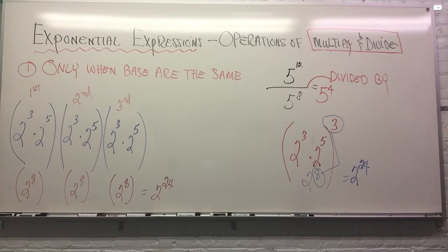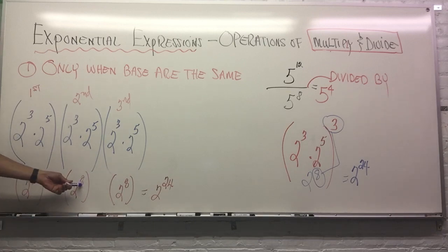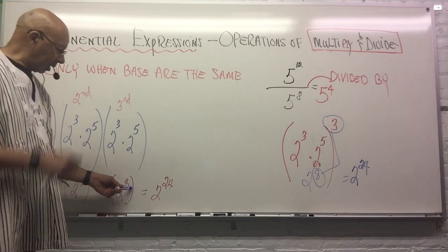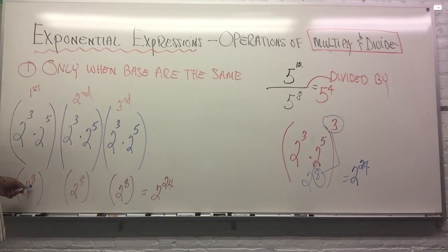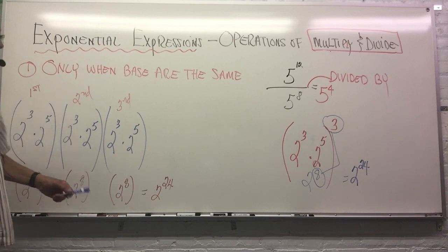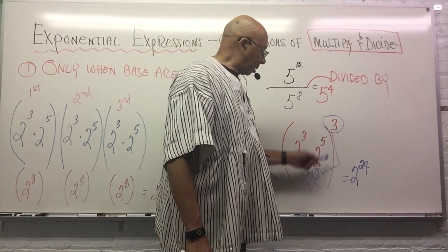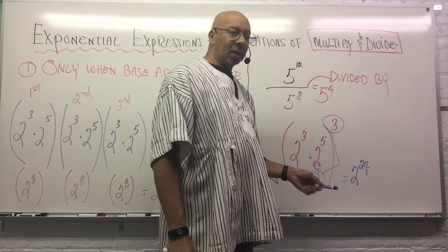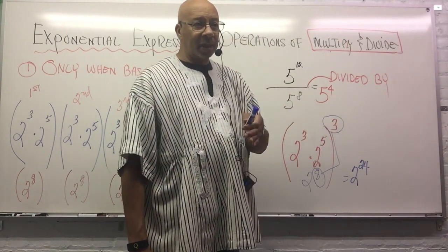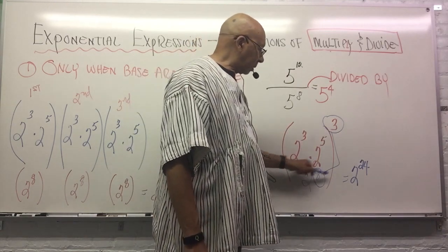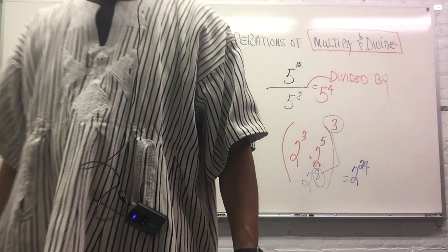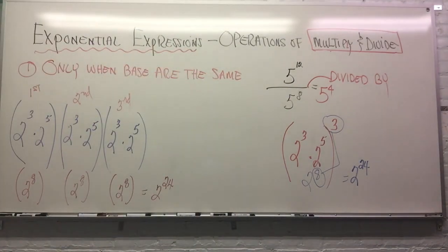Multiplication is nothing but a shortcut to addition. We did it the long way: eight plus eight is 16, and 16 plus eight is 24. So when you have to raise an exponent to a power, instead of adding the exponents, you multiply. Take the outer exponent times the inner exponent — three times eight — and get there quicker. That's multiplication and division of exponential expressions.